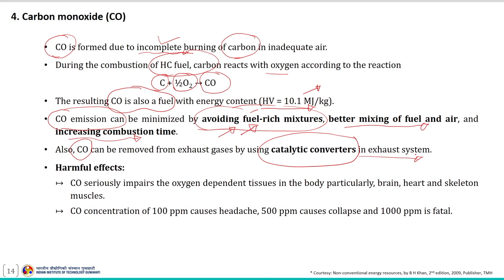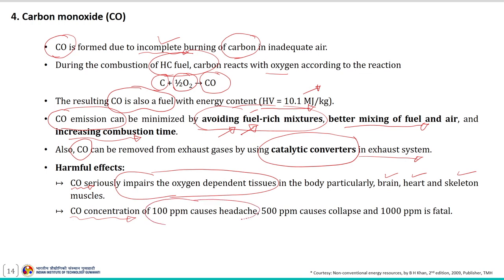The harmful effects of carbon monoxide are: it seriously impairs the oxygen-dependent tissues in the body, particularly the brain, heart and skeletal muscles. A carbon monoxide concentration of 100 ppm causes headache, 500 ppm causes collapse, and 1000 ppm is fatal.